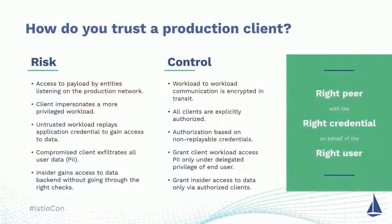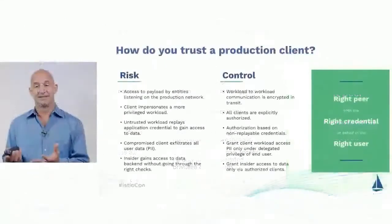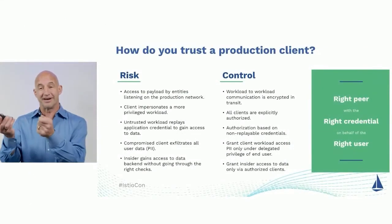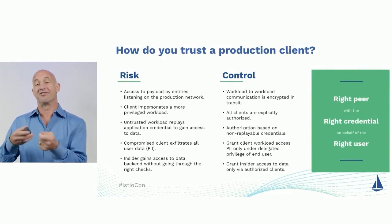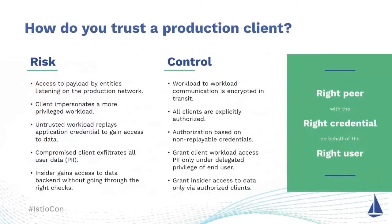In this model, the strategy is about what are the risks and what controls we put in for those risks. We're trying to get the right peer — right service you're talking to — with the right credentials, on behalf of the right user. For example, we want to make sure you can't listen in on the payload. If we assume the network is not necessarily safe, that's what zero trust means — there may be lurkers spying on traffic even inside the firewall, so we still want traffic encrypted. MTLS in Istio takes care of that. We also want to make sure clients can't pretend to be other clients, so all client services are explicitly authorized and have an explicit ID.